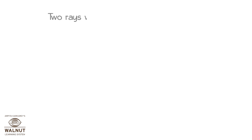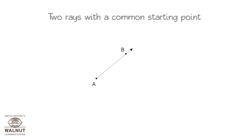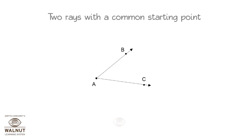Two rays can have a common starting point. Rays AB and AC have a common starting point at A. Such rays form an angle. We call it Angle A.